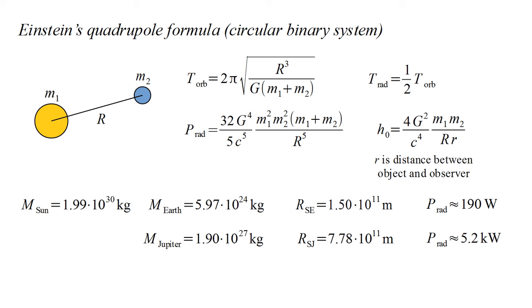For Jupiter, we find about 5 kilowatts. Still negligible. Gravitational waves play no significant role in our solar system.